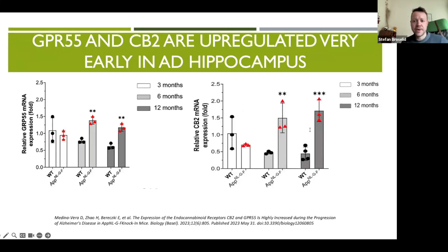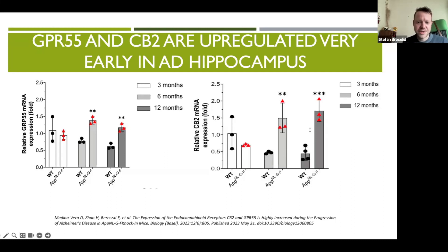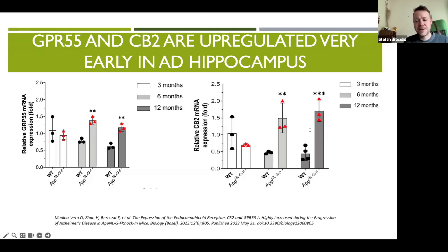Let's delve into the molecular changes occurring in the hippocampus during the early stages of Alzheimer's disease. The graphs illustrate the expression levels of two key endocannabinoid receptors, GPR55 and CB2, in the hippocampus of mice. In the Alzheimer's disease model mouse (APPNLGF), the expression of GPR55 is significantly upregulated compared to wild-type controls — this increase is evident at six months of age, when cognitive symptoms are starting to emerge. Similarly, CB2 mRNA expression shows a marked upregulation in the Alzheimer's model at six and twelve months. These findings suggest that both GPR55 and CB2 receptors are upregulated very early in the disease process, indicating their potential involvement in the pathological mechanisms of Alzheimer's.